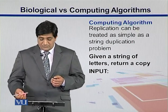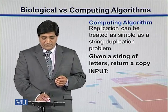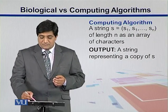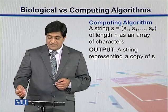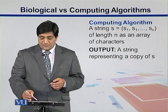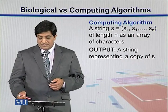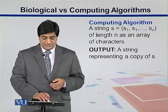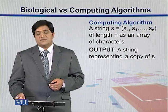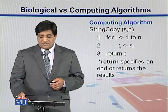So what is the problem here? Given a string of letters, return a copy. We have the input, that is a string. We can have strings of different lengths, so length N. What we want in the end is a string that represents copies of S — copies of those sequences. The problem is simply to duplicate them.